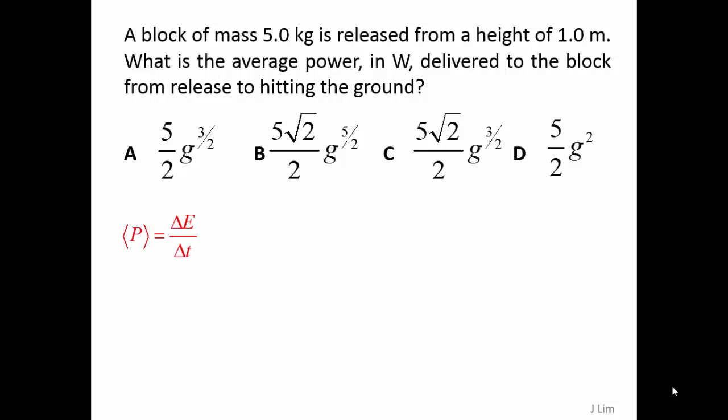The average power is given by the total energy divided by total time. The change in energy is MGH, which equals 5G.